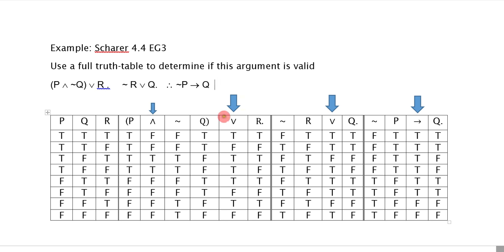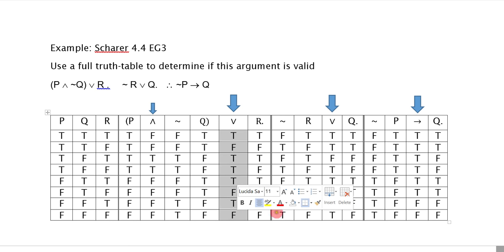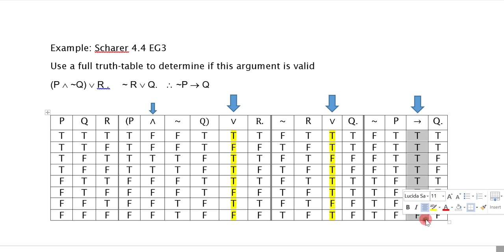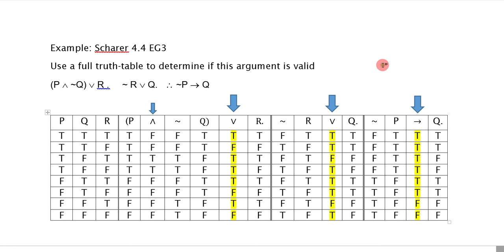Completing the truth table is pretty straightforward. What you can do is just focus on the main connective columns and highlight them to make the job a little easier. The reason is that the main connective always represents the truth value of that sentence. So if I want to know when the first premise is true or false, I just need to look at the truth value of the main connective column.